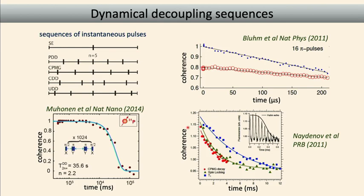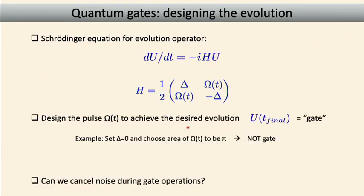These are experiments on different types of spin qubits where these methods have been applied quite successfully to extend coherence times, in some cases from tens of nanoseconds up to about a millisecond. These methods are quite effective at preserving quantum states, but what we actually want to do is perform gate operations on our qubits. The question is: can we do similar things while we're trying to do gate operations?